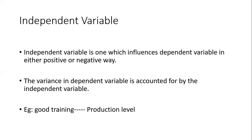The independent variable is one which influences the dependent variable, either in a positive or negative way. It can influence positively or negatively in any direction. The variance in the dependent variable is accounted for by the independent variable — how much change will occur in the dependent variable is decided by the independent variable.